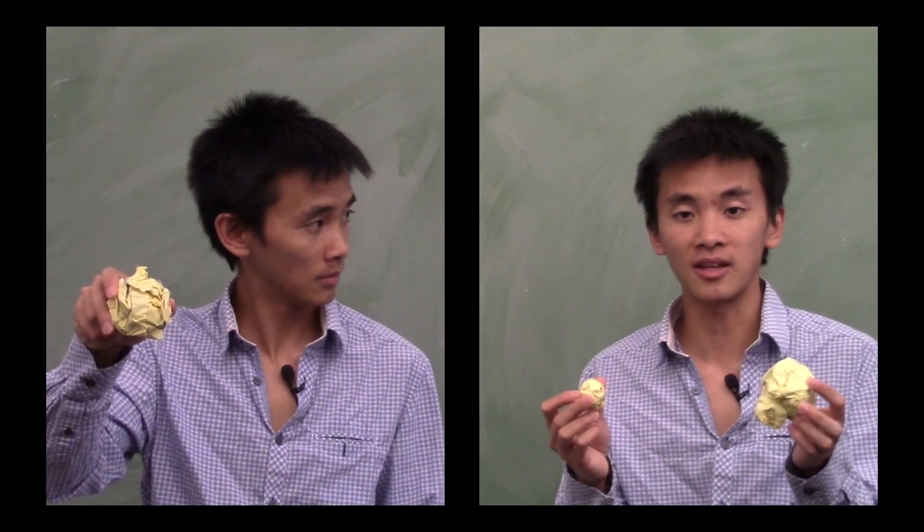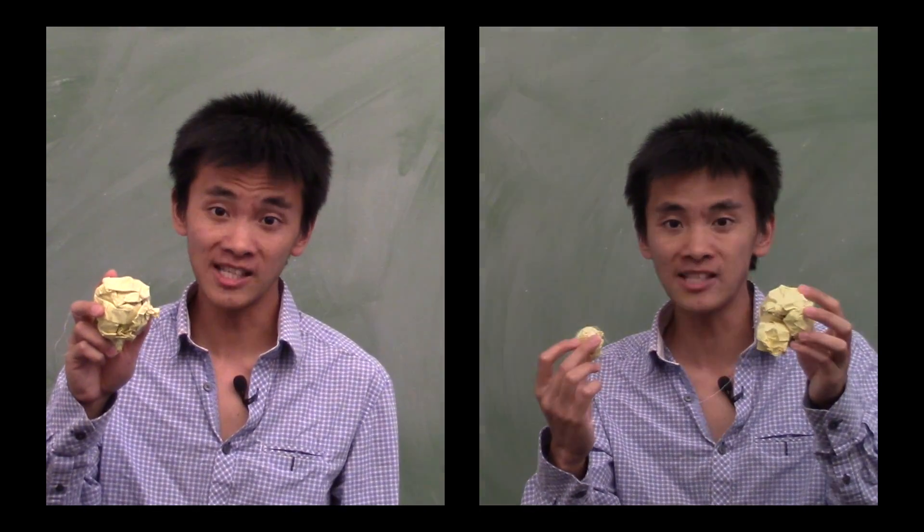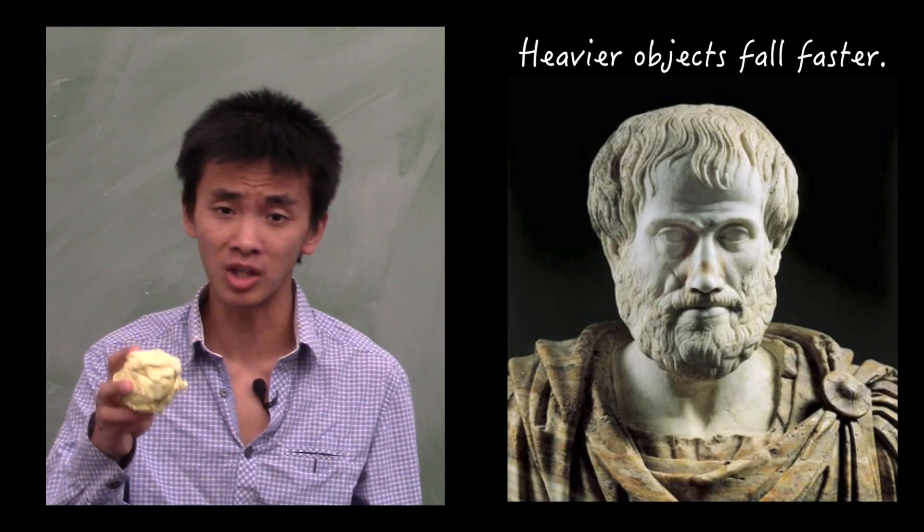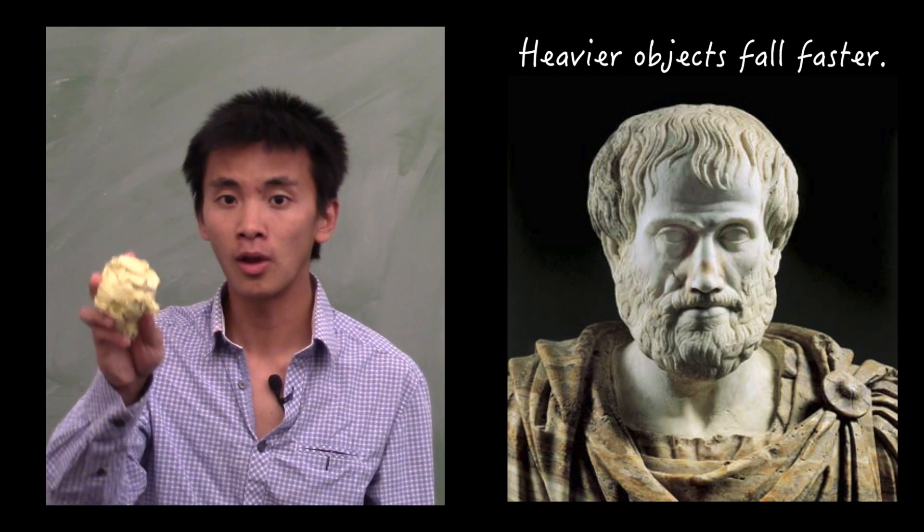On one hand, he imagined throwing a heavy ball alone. And on the other hand, he imagined throwing a heavy ball attached to a lighter ball. Which one of these two will fall faster? Well, on one hand, the heavy ball alone is lighter than the heavy ball plus the light ball. So if you apply Aristotle's principle of falling objects, since this is lighter, it should fall slower.